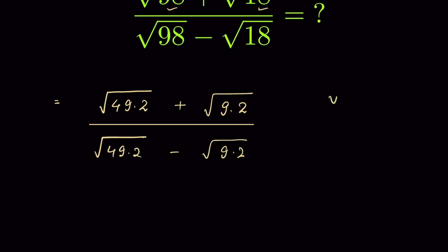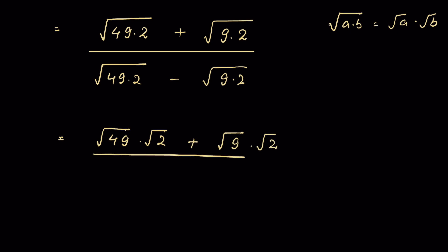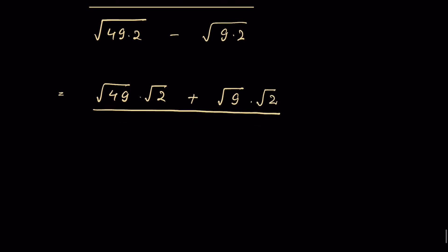Since √(a×b) = √a × √b, we can split each term. This gives us (√49 × √2 + √9 × √2) / (√49 × √2 − √9 × √2).